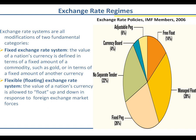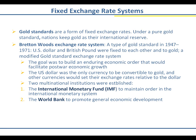Exchange rate regimes are all modifications of two categories. Fixed exchange rates, where a nation's currency is defined in terms of a fixed amount of a commodity like gold or silver, or in terms of a fixed amount of another currency. At the other extreme are flexible or floating exchange rates, where the value of a nation's currency is allowed to float up and down in response to supply and demand of the foreign exchange market. The pie chart shows, as of 2006, IMF members and the alternative exchange rate regimes they've adopted — from a free float at 14%, which includes the United States, to managed float, fixed peg, no separate tender, currency board, or adjustable peg.